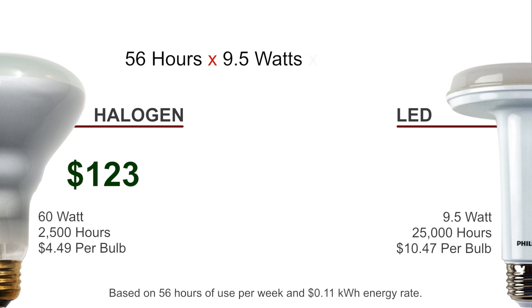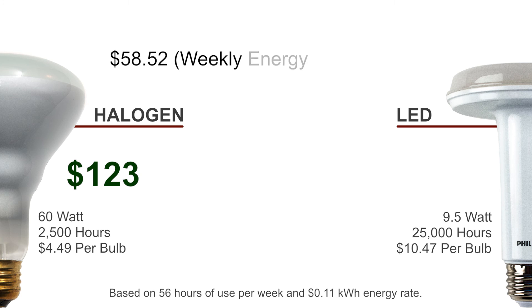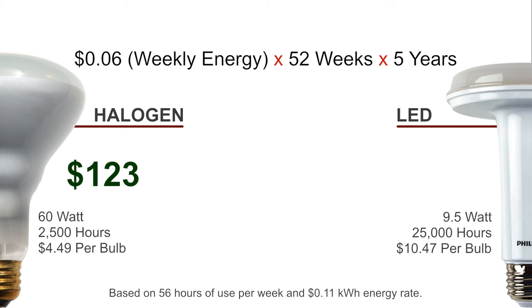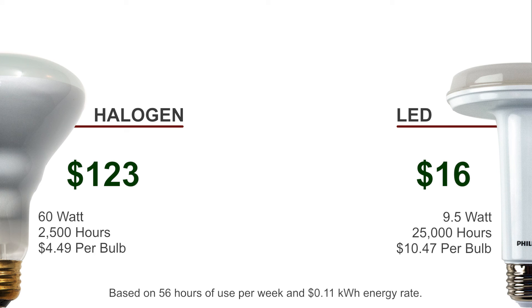Now let's do the LED. So 56 times 9.5 watts times 11 cents per kilowatt hour — that's 58.52 divided by 1000. That's 6 cents energy use per week, times 52, times 5. That comes to $16 in energy cost over 5 years.